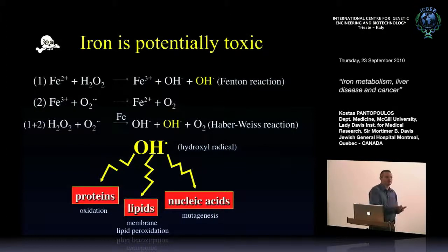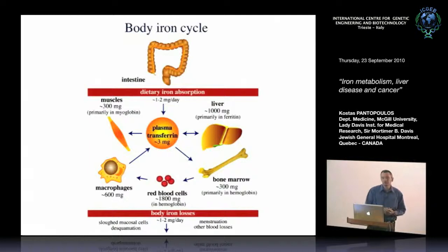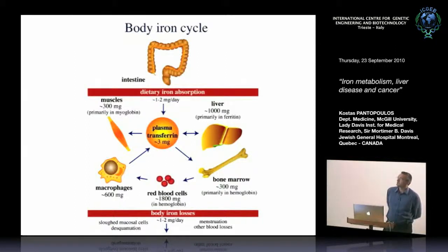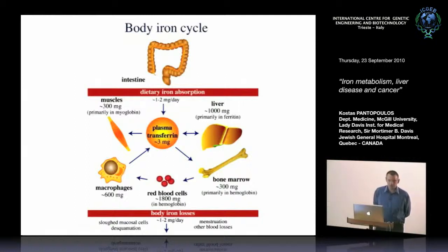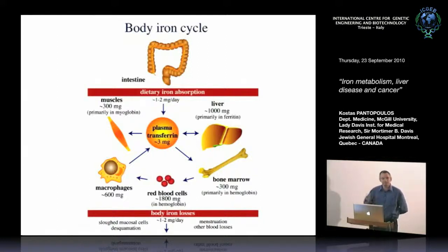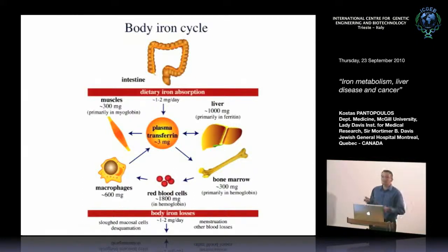Iron is essential yet potentially toxic, which suggests that iron metabolism must be very tightly regulated. This slide gives an overview of the regulation of body iron homeostasis. We absorb iron from the intestine on a daily basis — about one to two milligrams — which is tiny compared to the total four to five grams of iron in the body. Most iron is contained within red blood cells in the form of heme for oxygen transport — about 70 percent or more.